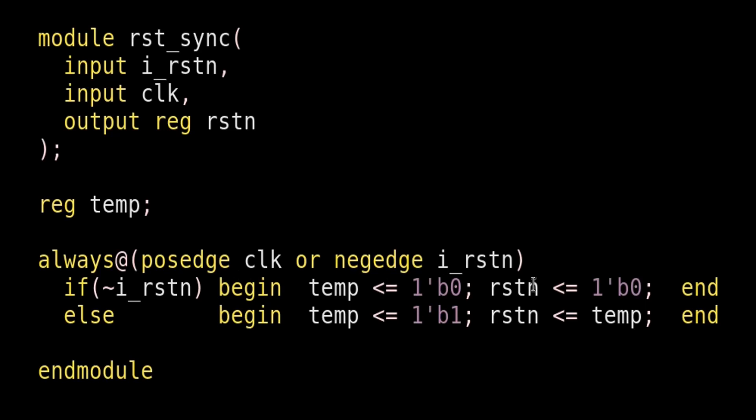Okay, we are able to assert reset successfully. Now in the else statement, when reset is deasserted, temp should be equal to one that is output of first flip-flop. Rstn which is output of second flip-flop should be equal to temp which is output of first flip-flop. But it should depend upon the clock edge now. So this is the RTL code of a simple synchronizer. If you have any query, you can write it down in the comment section.